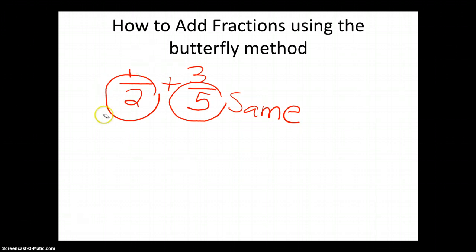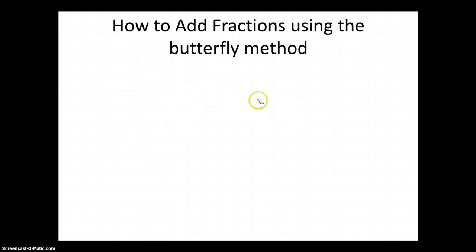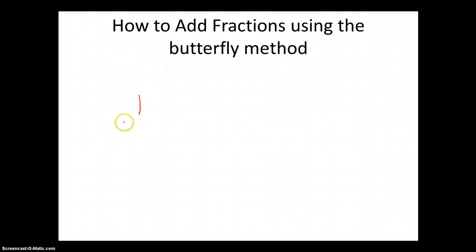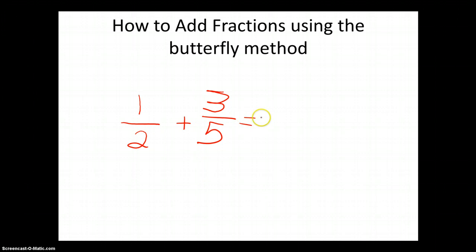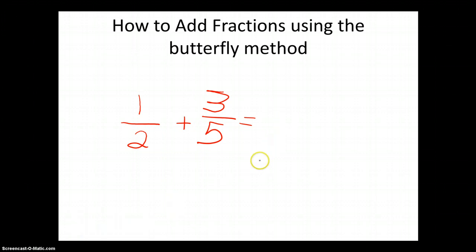A long time ago, your parents probably learned to find the lowest common denominator, which is still the right way to go. But I have a simple trick to show you that might help you with adding fractions. One-half plus three-fifths — I'm using what's called the butterfly method. In the butterfly method, I simply cross-multiply, then add, and then simplify.